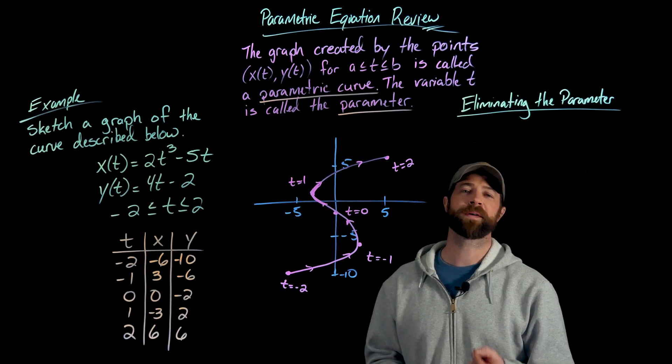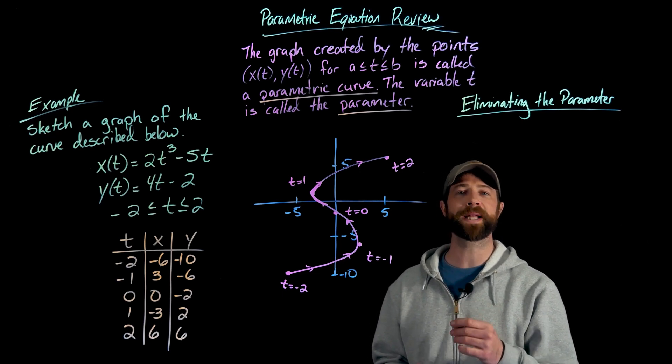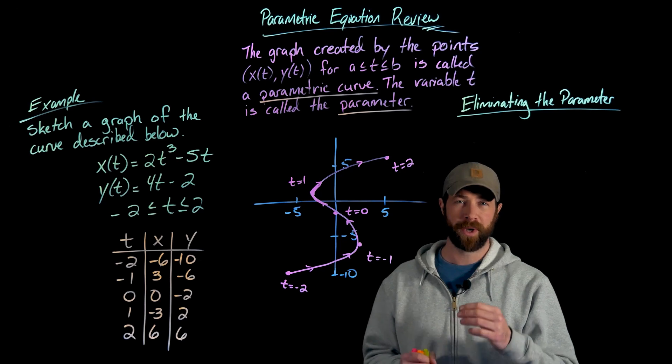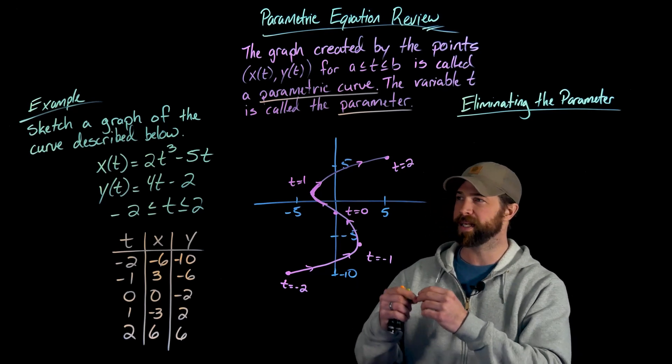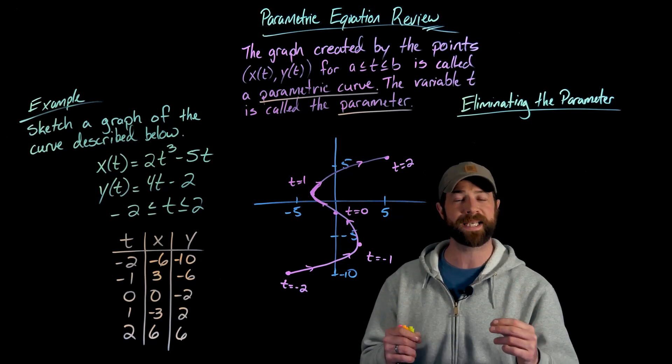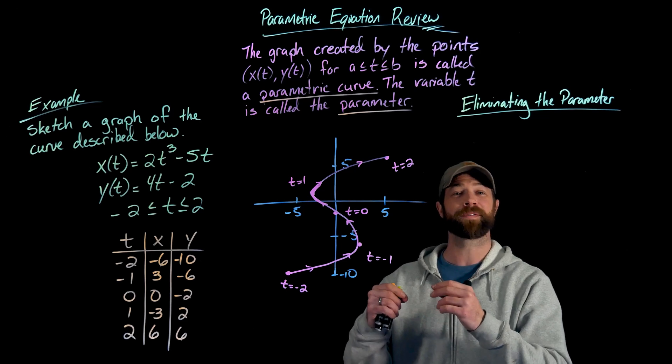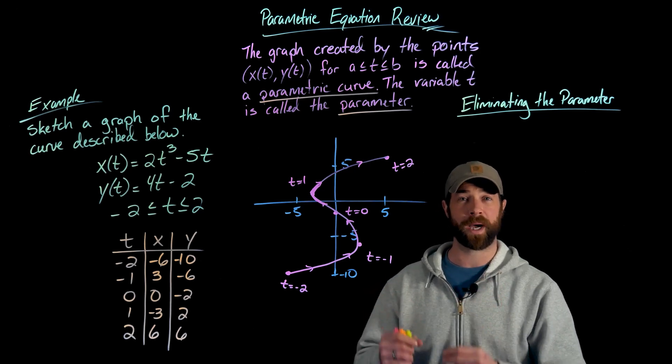One useful way of analyzing the parametric curve is to go straight ahead and eliminate the parameter. When eliminating the parameter, what we're looking to do is instead of having these two equations that describe x and y in terms of t, what we want is a curve that is an equation in terms of just x and y.